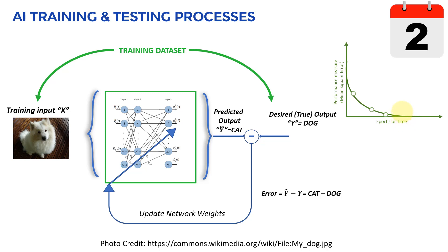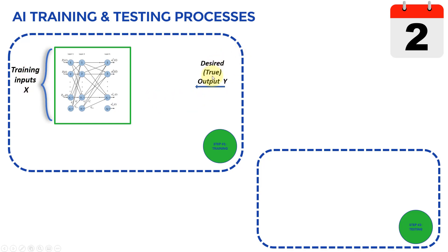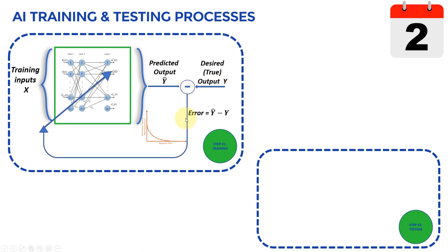In the next lecture, I'll show you the details of what an epoch means and link it back to Google Teachable Machines. To summarize: in step one, training, we use a training dataset with inputs x and outputs y. The model initially knows nothing, generates predictions y-hat, we calculate the error — the difference between the model's predictions and real life — then go back and update the weights, repeating that loop until the model is trained.